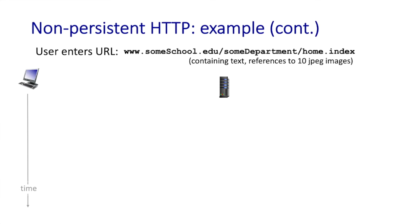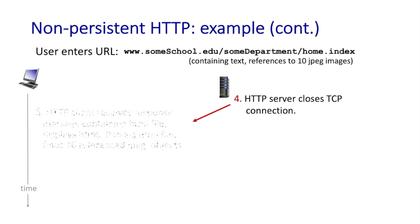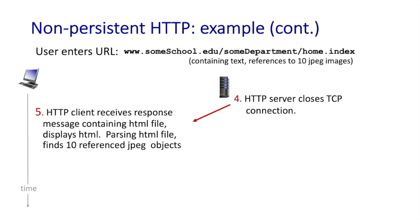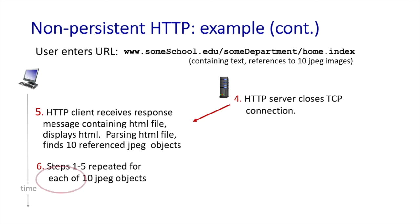After sending the response message, in Step 4, the HTTP server closes the TCP connection. In Step 5, the HTTP client receives the response message containing the HTML file, displays it, parses it, and finds the 10 referenced JPEG objects. In Step 6, it must then repeat the preceding five steps for each of those referenced JPEG objects.